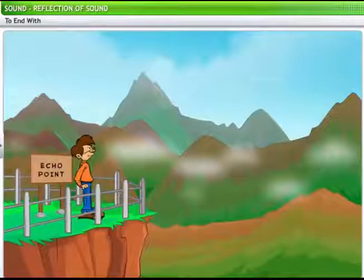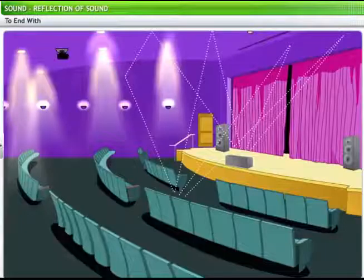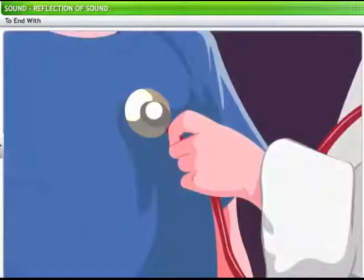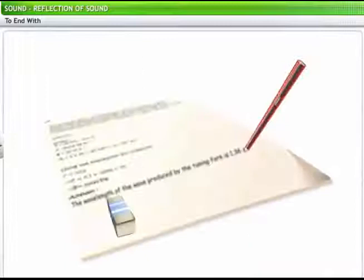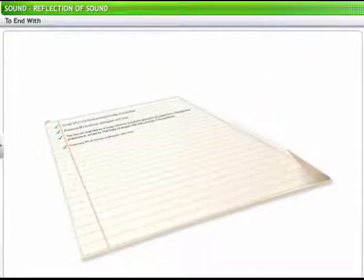This brings you to the end of this lesson on reflection of sound. In this lesson, you learned how reflection of sound results in echoes and reverberation. You also learned about applications of reflection of sound and the working of the human ear. The section on solved problems provides you an opportunity to review some model problems based on these concepts. To revisit the key points covered in this lesson, please review the flash card.